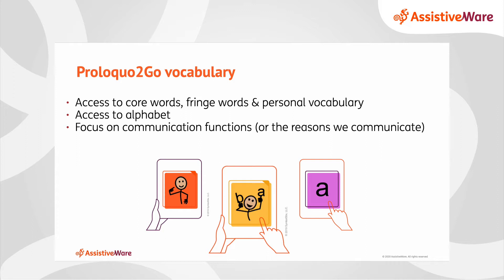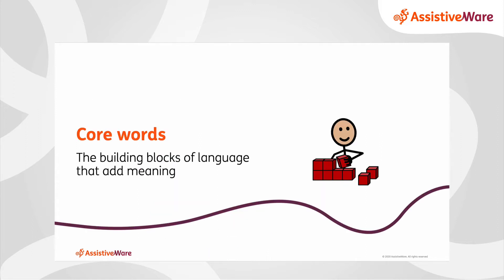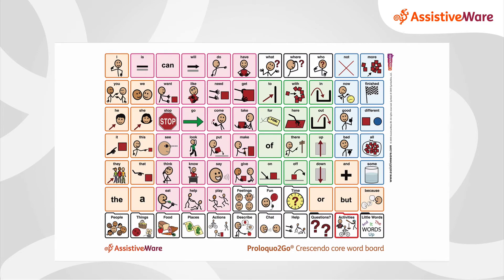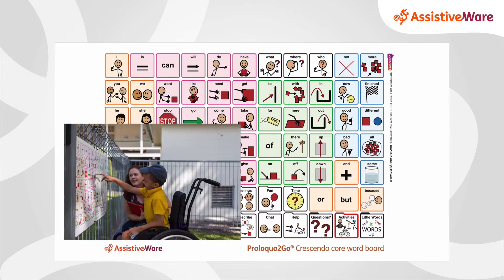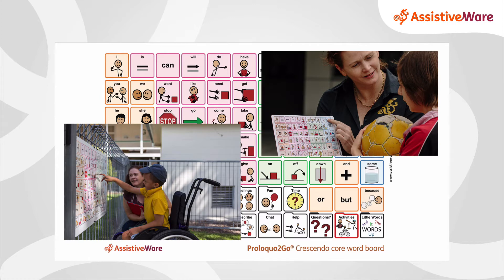When AAC like Proloquo2Go has these things, it allows a person to communicate for many reasons. We often call these reasons communication functions. Core words can be considered to be the building blocks of language — all those words that we say and use often that add meaning. The colored words you see on this board are examples of some core words. You can download these from our website to print off paper-based versions of the vocabulary, like for a poster or a board.